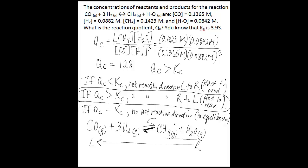To sum up, by calculating QC and comparing QC to KC, we know that the net reaction direction for our case is going from products to reactants, so the reverse reaction rate is faster than the forward reaction rate. When our reaction finally does reach equilibrium, the forward reaction rate will be equal to the reverse reaction rate. That's how you can use QC and KC to predict net reaction direction.